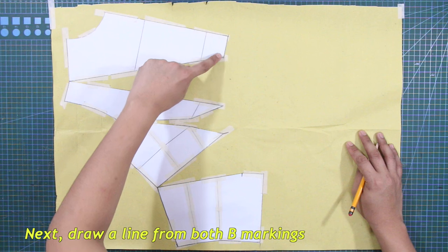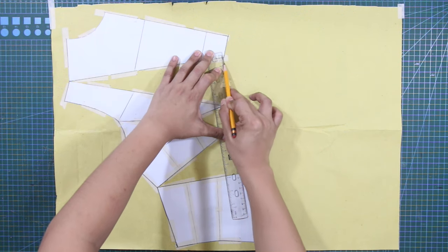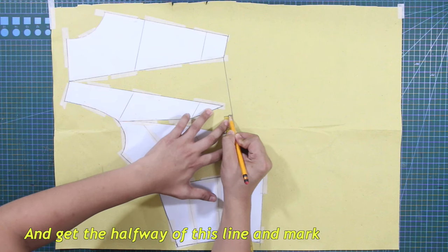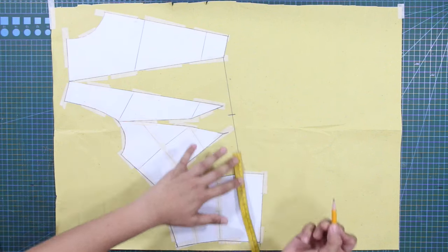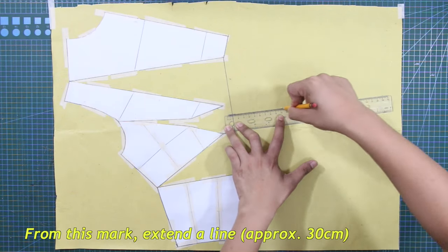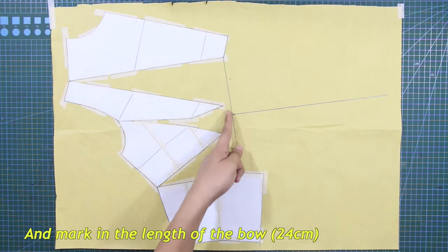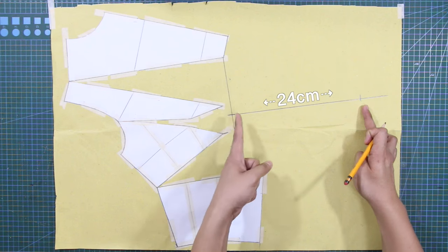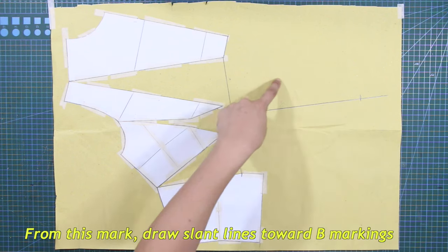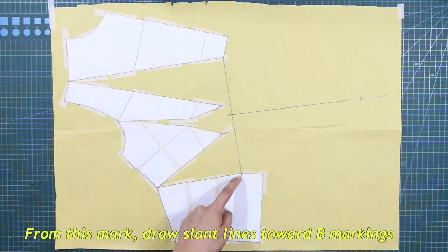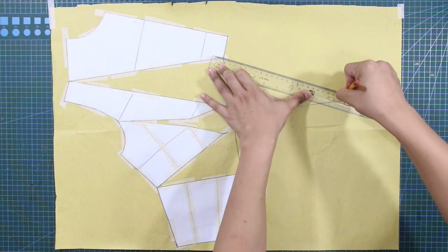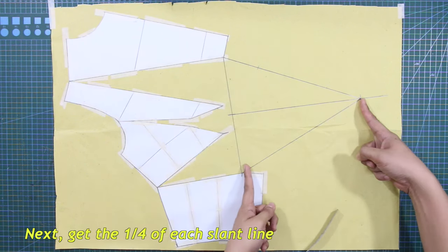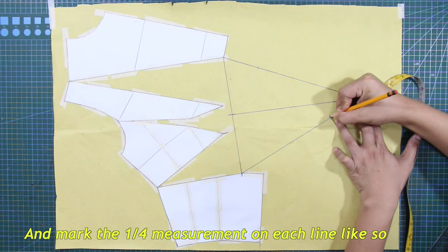Next, draw a line from both B markings and get the halfway of this line and mark. From this line, extend a line approximately 30 cm. Next, mark in the length of the bow. In this case, it is 24 cm. And from this mark, draw slant lines toward B markings. Next, get the 1/4 of each slant line and mark the 1/4 measurement on each line like so.